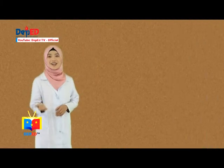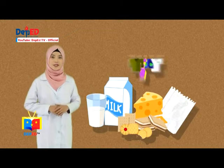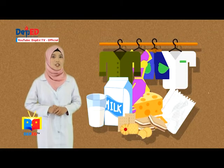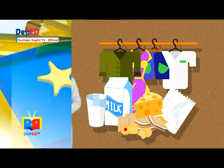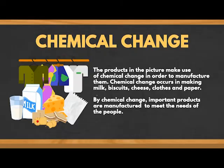Picture 3 shows milk, biscuits, cheese, clothes, and paper. The products in the picture make use of chemical change in order to manufacture them. Chemical change occurs in making milk, biscuits, cheese, clothes, and paper. Through the use of chemical change, important products are manufactured to meet the needs of the people.